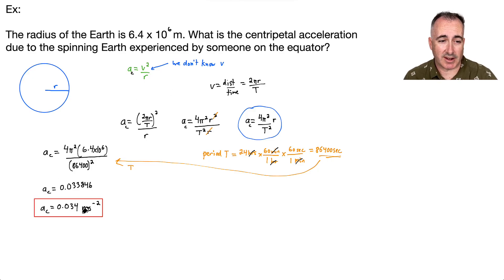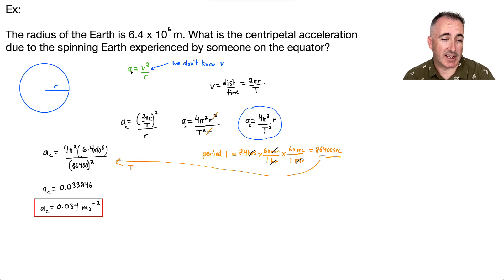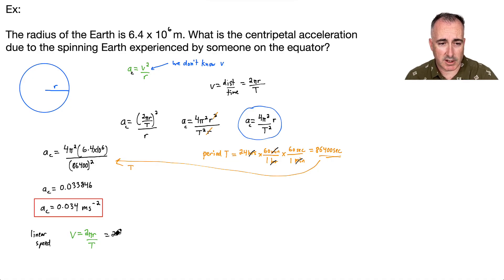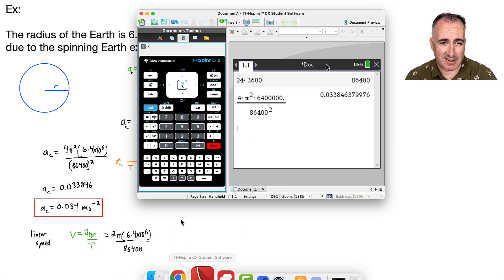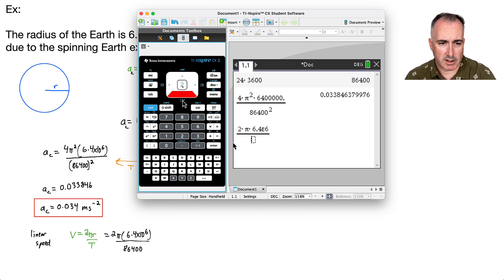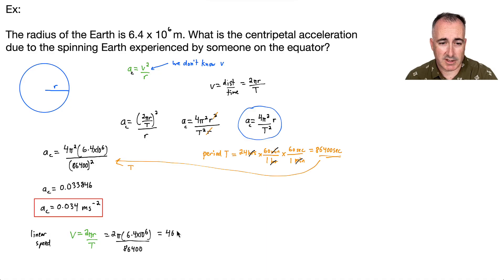That's not a very big acceleration, which makes sense — we don't really feel it. We feel the 9.81 m/s² of gravity much more. But it's fun to also find the linear speed. Using V equals 2 pi r over T: 2 times pi times 6.4 times 10 to the 6, divided by 86,400, gives 465 meters per second.